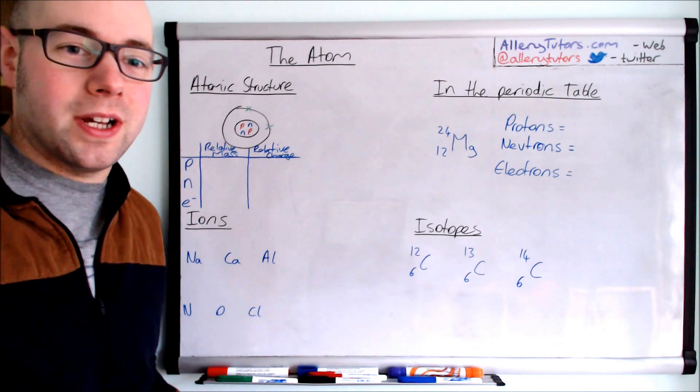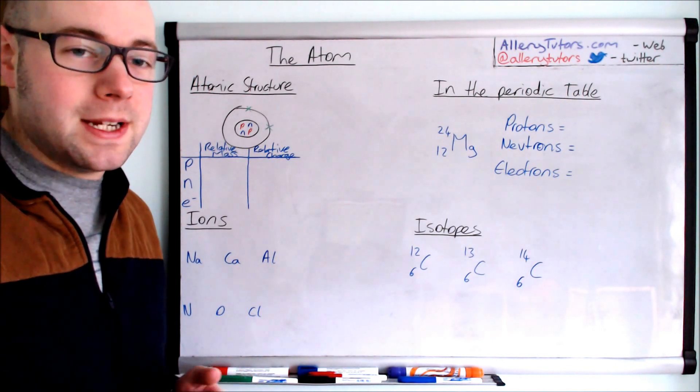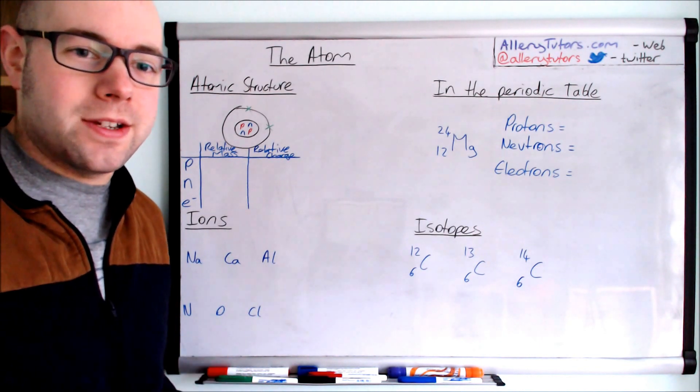In this video we're going to look at the atomic structure. We're also going to look at what the numbers mean for each element in the periodic table. We're going to look at ions and isotopes as well.